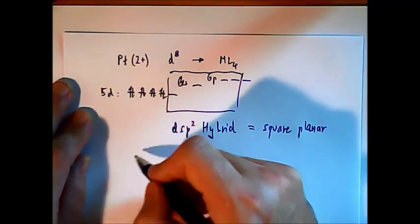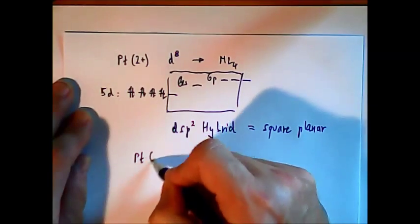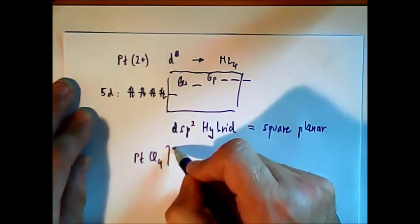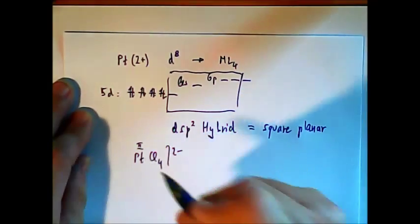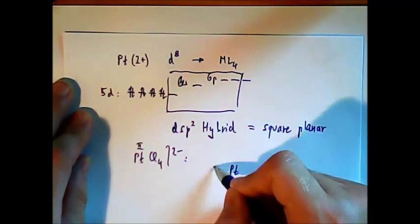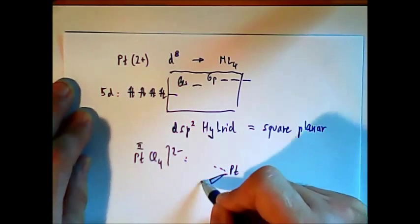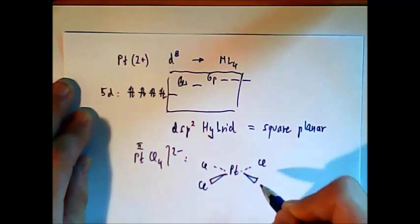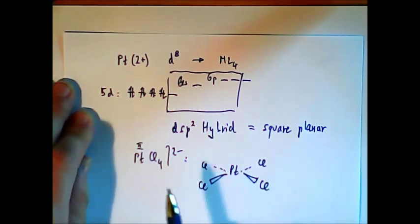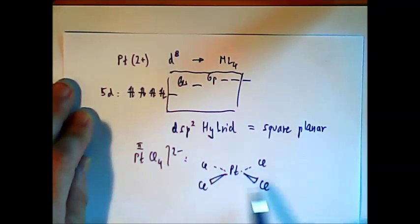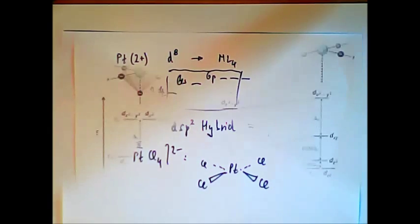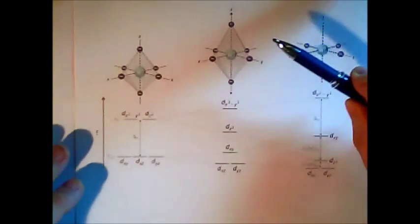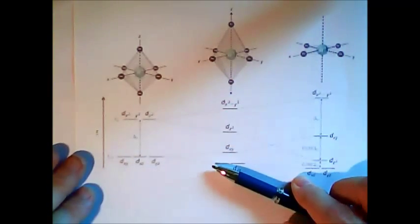So for example, platinum Cl4 2- should look something like this. All the atoms are in one plane. In this case perpendicular to the paper. So where are the electrons? What is the electron configuration for the square planar case?